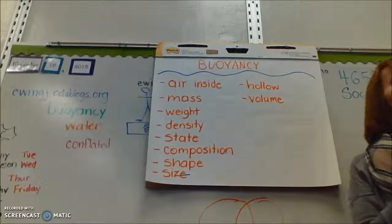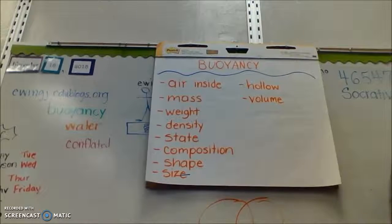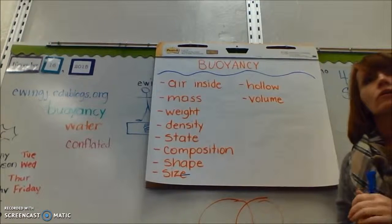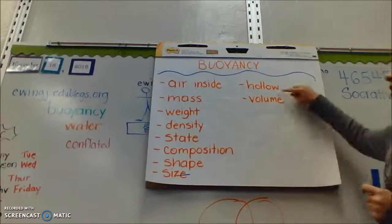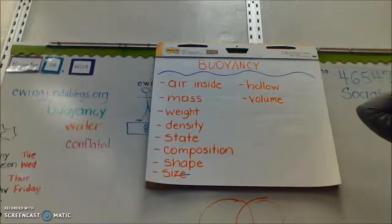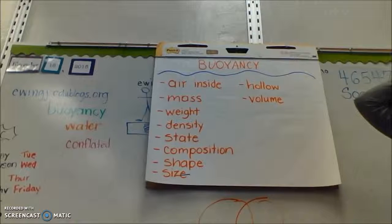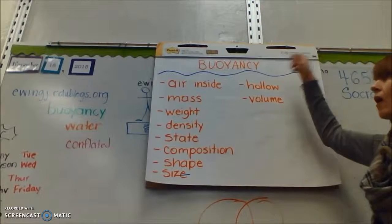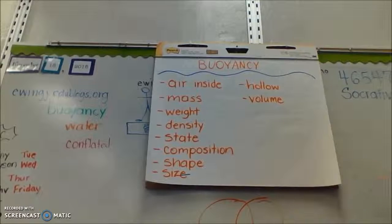What's another one you think might not be the only reason? Brooklyn says hollow. Why do you think hollow can't be the only reason? You're saying if it's big and only has a little bit of hollow space in it it would sink or float? Can you think of an example where there's something hollow and it sinks?